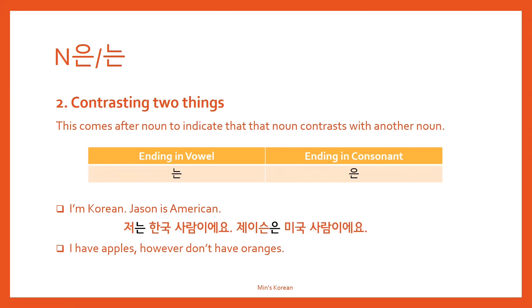And another example: 'I have apples. However, I don't have oranges.' So it's a contrast. You can say 저는 사과는 있어요. 그런데 오렌지는 없어요. So 사과 and orange contrast each other.